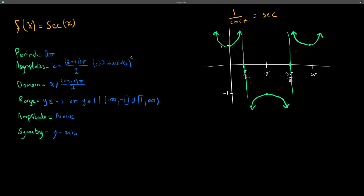The period of secant stays the same as cosine — two pi, since one full circulation covers pi and then another pi. The asymptotes occur at odd multiples of pi over two. The domain is all x values except the asymptotes. The range goes from one to positive infinity or from negative one to negative infinity. There is no amplitude since y-values are unbounded, and the symmetry is about the y-axis, the same as cosine.